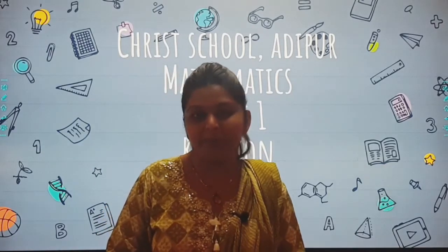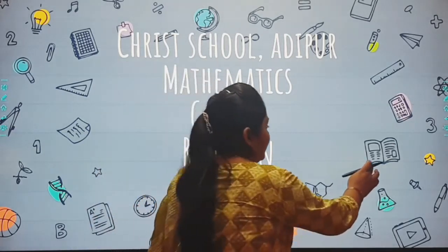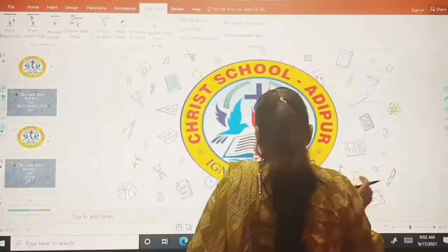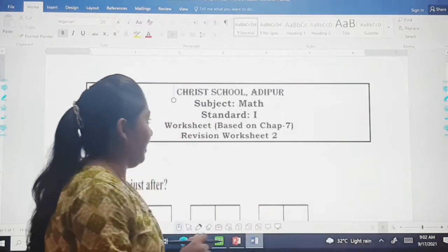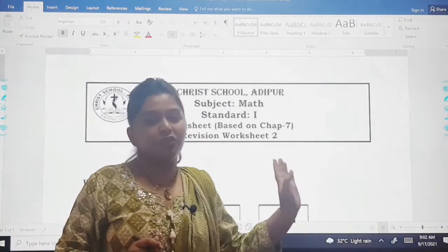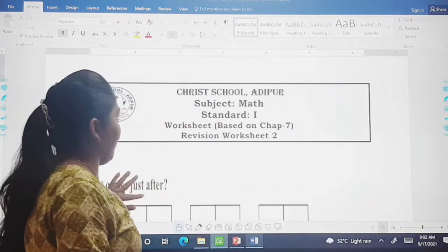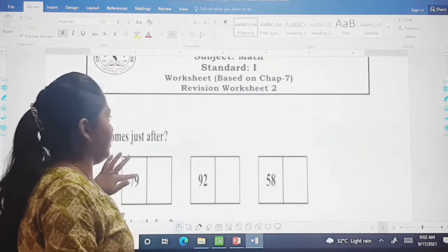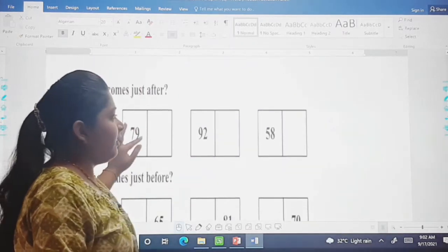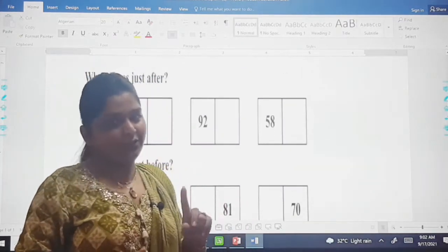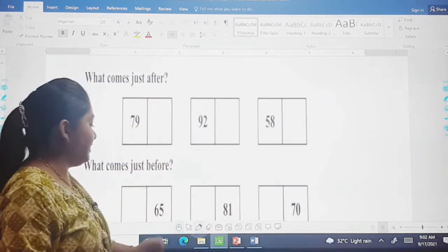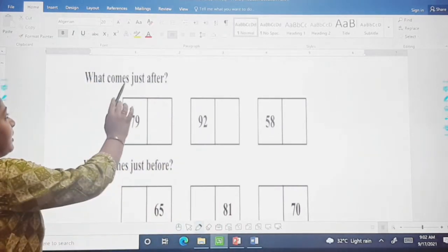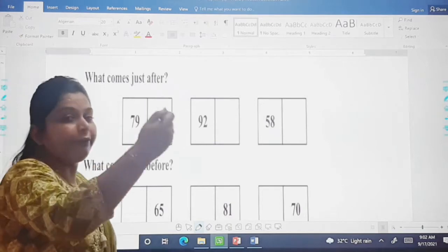So all of you are ready? Let us see, dear kids. This is your worksheet 2 based on chapter number 7, dear children. Let us see the first question. That is, what comes just after?